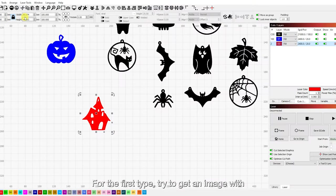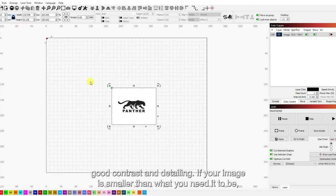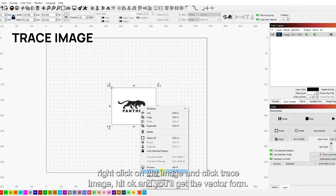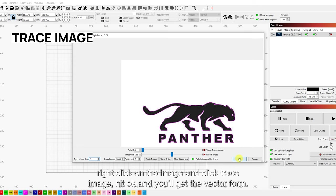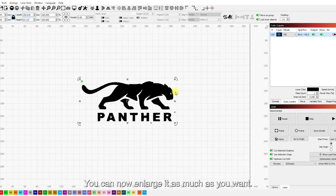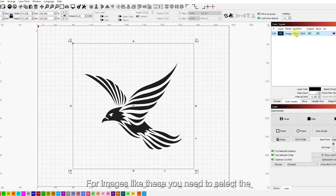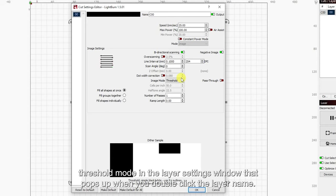The first one is plain black and white images like logos. The second one is grayscale images like photographs. For the first type, try to get an image with good contrast and detailing. If your image is smaller than what you need it to be, right click on the image and click trace image, hit OK and you'll get the vector form. You can now enlarge it as much as you want. For images like these, you need to select the threshold mode in the layer settings window that pops up when you double click the layer name.